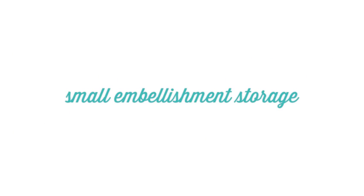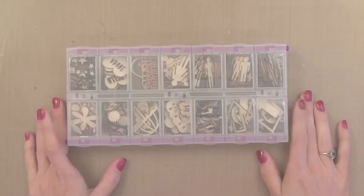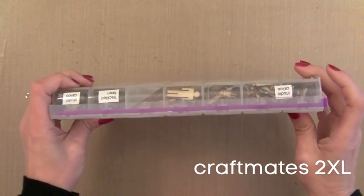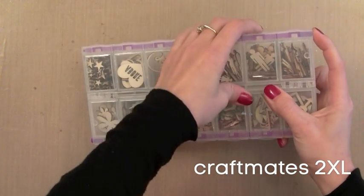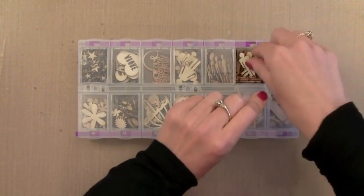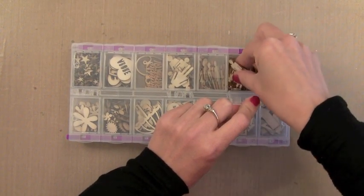First of all for small embellishment storage, I think this is a tricky one. I've tried different things throughout the year and I finally found something that I love. These are the Craftmates containers. I like these because they lock and are secure. You just push this purple button over here and it unlocks it and you can open the little compartments. I have all my wood veneers stored in these.